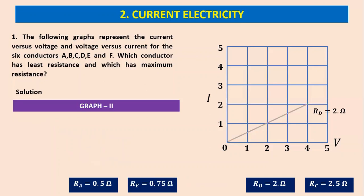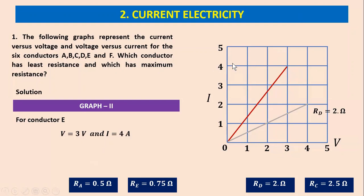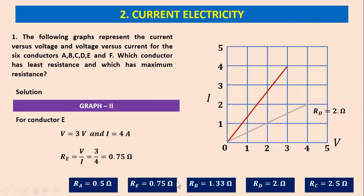The next straight line goes through a point (3, 4). For a given voltage of 3 volts, the corresponding current will be 4 amperes. For conductor E, R_E equals V by I, which is 3 divided by 4, equal to 0.75 ohms.